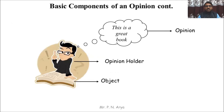This picture describes the basic components of an opinion. A person has an opinion about a particular product. The book is the object, and the person is the opinion holder. The person thinks or has an opinion about the book — for example, it is a great book. The person holds an opinion related to an object.